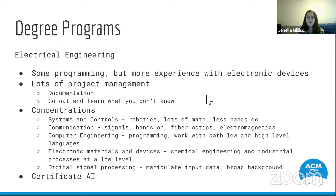The last concentration we'll discuss is digital signal processing, probably the most broad concentration in the electrical engineering degree. It's all about manipulating signals: you get an input signal or input data, and then interpreting and manipulating it for whatever you want your program to do is really what digital signal processing is about. Just like the computer engineering degree, you'll also have the opportunity to get a certificate in AI from the electrical engineering degree as well.